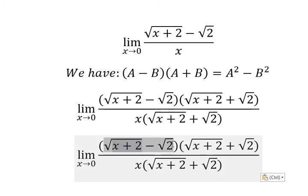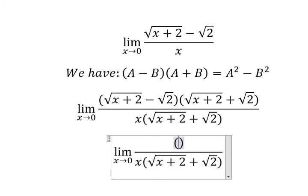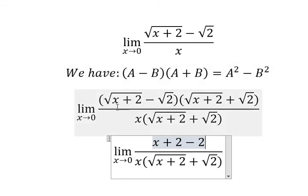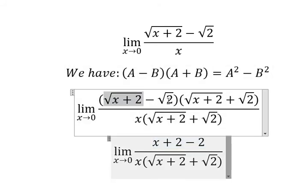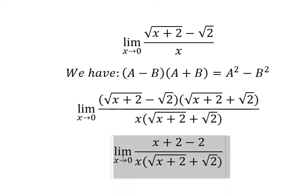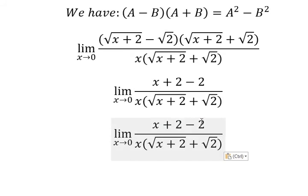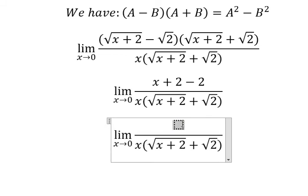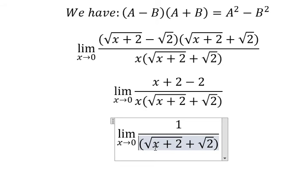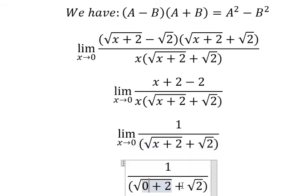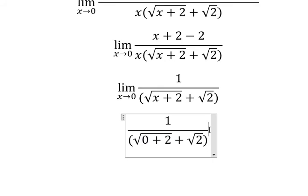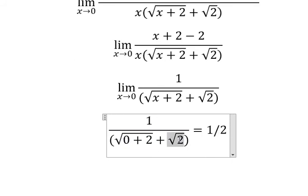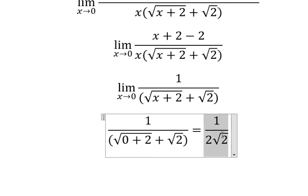Now you get x plus 2 minus 2. Because we have the power two, we can cancel the square root. Then 2 minus 2 cancels, and x divided by x cancels. Now we put zero in and you get one over two times the square root of two. This is the final answer.